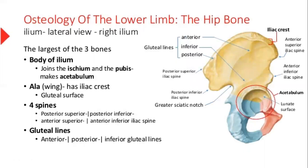Starting from the hip bone, the hip bone is basically made of three bones by fusion. The yellow part is ilium, the blue one is ischium, and the red one is pubic bone.